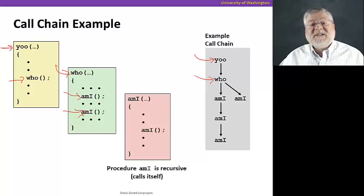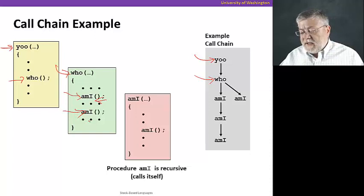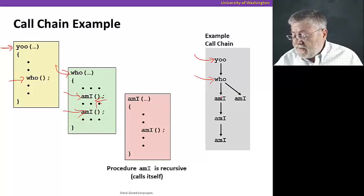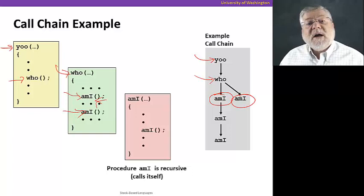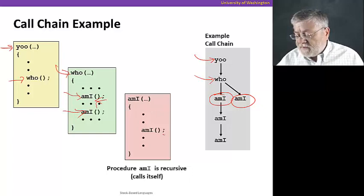And in between, it probably does some other things. So we're gonna call mi, then return back to this point, and do some other stuff, and then call mi again. So here we see the two calls to mi that happen one after the other in who.